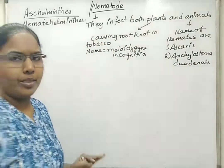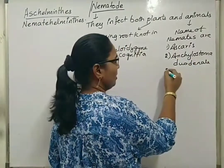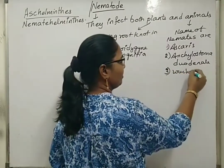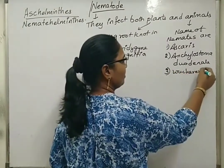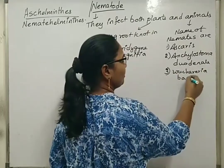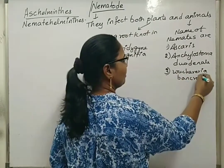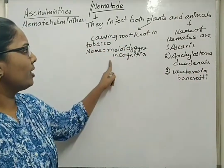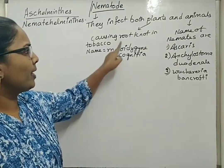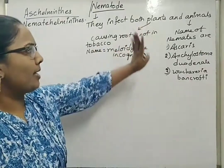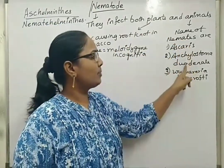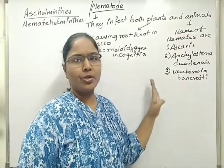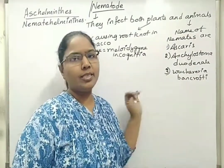The third example is Wuchereria bancrofti. So Meloidogyne incognita causes root knot infection in tobacco plants. These three examples are given in your NCERT as nematodes that cause infections in animals.